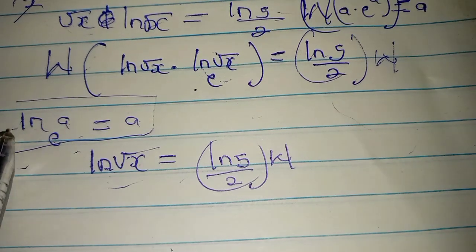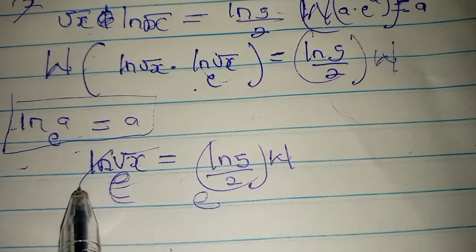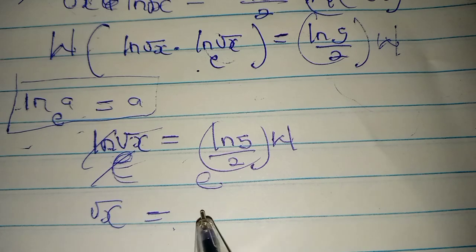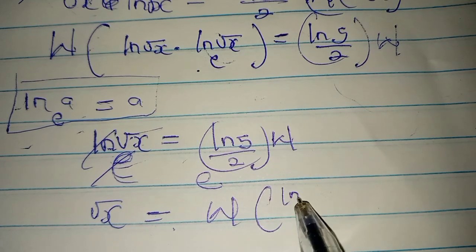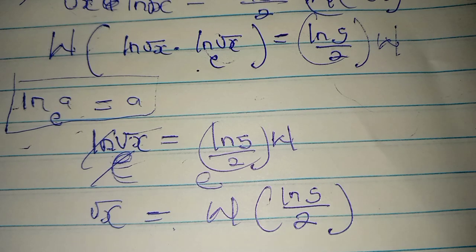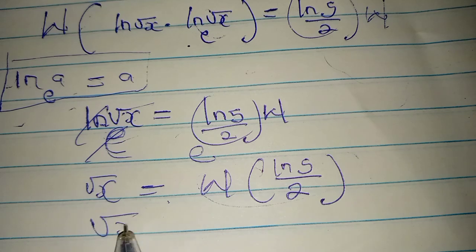you need to take e on both sides in order to cancel the natural log. Don't forget, I'm still using this property. So if you take the e on both sides, you cancel this, you have √x equals the W Lambert function of the natural log of 5 by 2. And now if you solve this in your calculator, the answer is approximately 1.64.